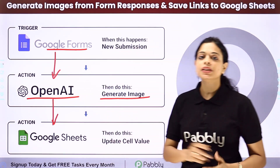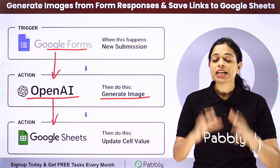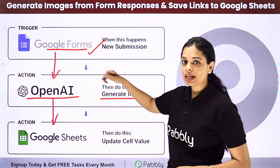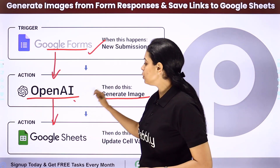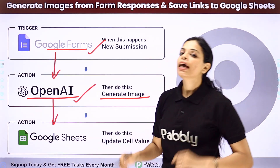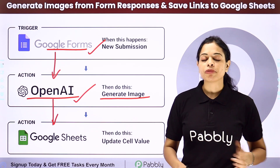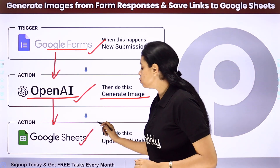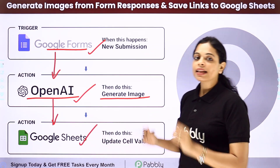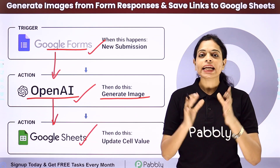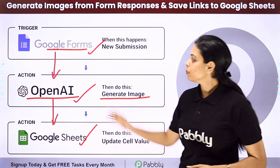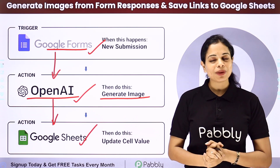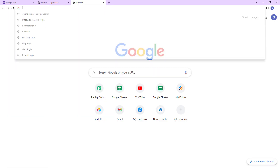This can be done using Pabbly Connect software. Your trigger application will be Google Forms, your first action application will be OpenAI, then you will shorten the links with Bitly, and your final action application will be Google Sheets. Let me take you to my screen to begin with the process.